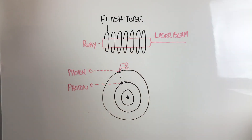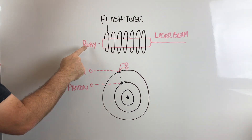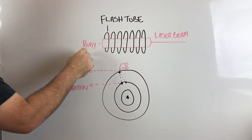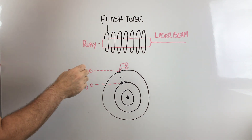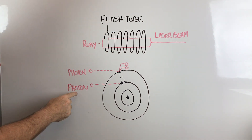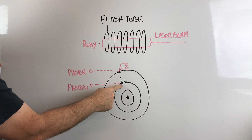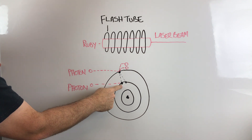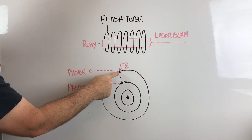Let's look at how a typical laser works. You have a flash tube surrounding a synthetic ruby, and photons are pumped into the ruby causing them to collide with electrons. The electrons absorb the photon energy, called stimulated absorption.